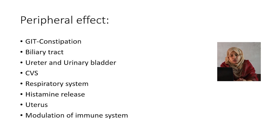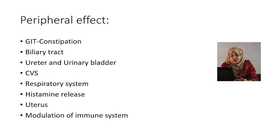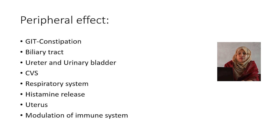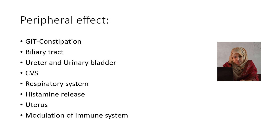In case of the uterus, morphine delays labor in a pregnant uterus. Regarding modulation of the immune system, there is decreased chemotaxis, decreased immune response, and decreased T-cell lymphocyte formation. As a result, there is a decreased immune system in morphine-addicted patients.